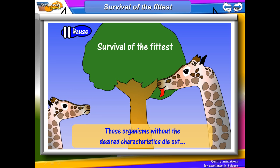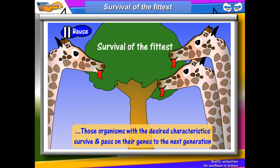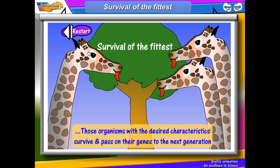The shorter-necked giraffe would not have survived and therefore could not breed, but the longer-necked ones would, outcompeting their shorter-necked cousins. They would survive and go on to reproduce, passing on their genes to the next generation. So the following generations of giraffes would all have longer necks. On the next generation again, the longer-necked ones could reach more leaves and were favoured, survived, passed on their genes, and therefore each subsequent generation of giraffes would have had even longer necks.